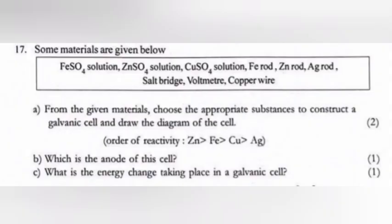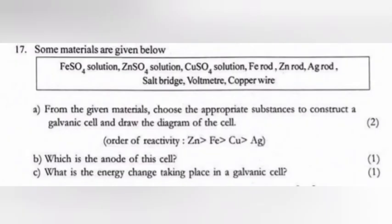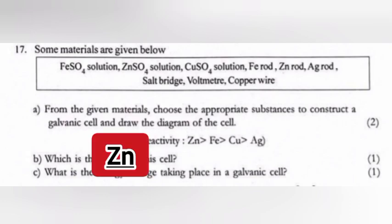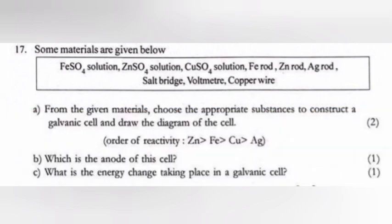Question 17: Some materials are given below. 17a: From the given material, choose the appropriate substance to construct a galvanic cell and draw the diagram of the cell. 17b: Which is the anode of this cell? Answer: Zinc. 17c: What is the energy change taking place in galvanic cell? Answer: Chemical energy converted into electrical energy.